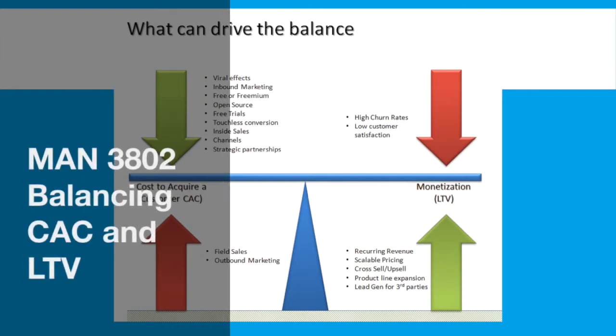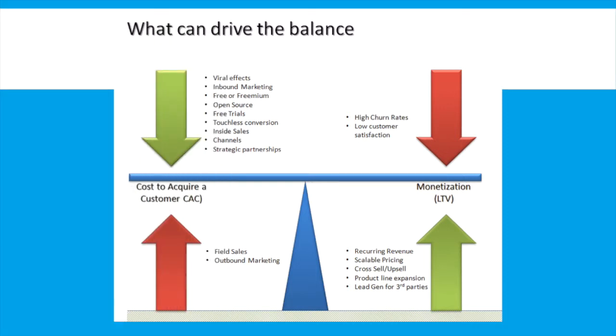Now, how can you drive balance in the equation? We have two ways: the customer acquisition cost side and the monetization side. So you can either increase one or decrease the other to drive balance and improve your customer acquisition cost metrics.